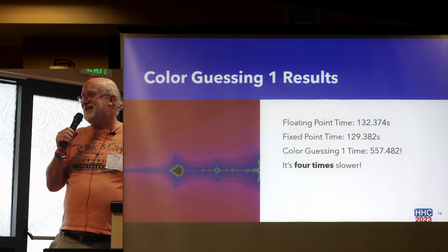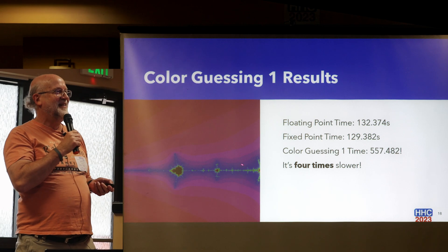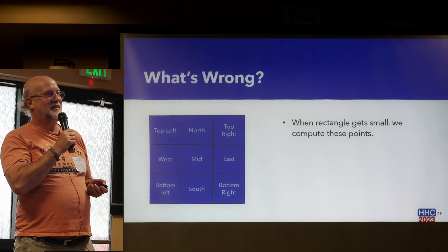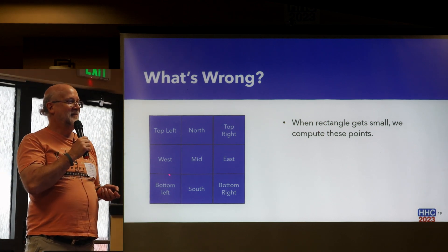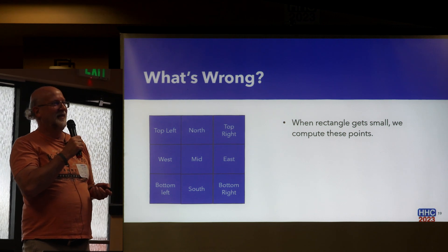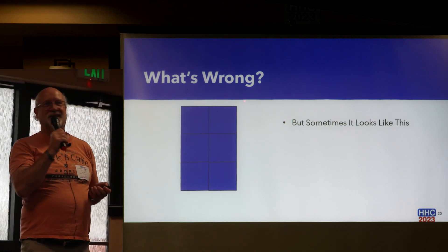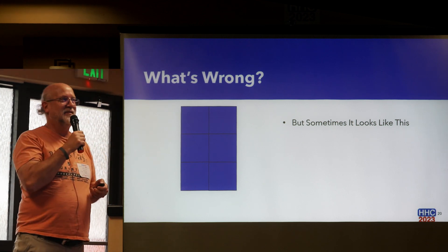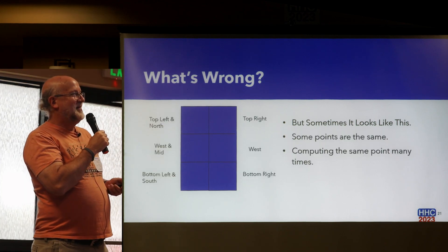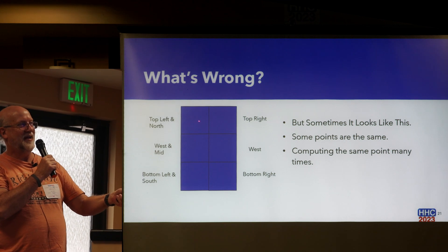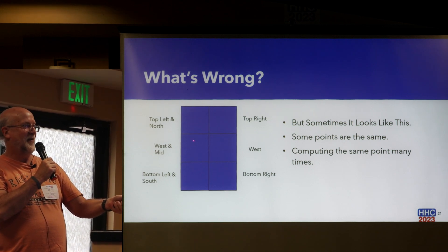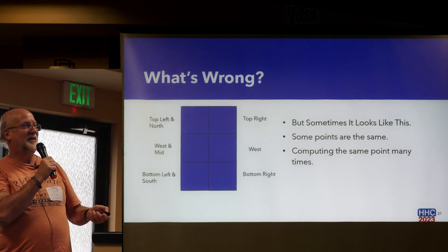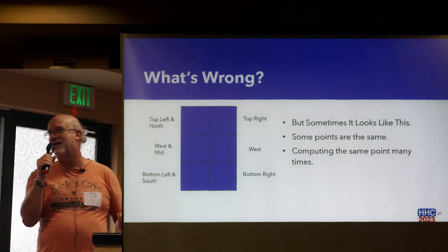Back in the 80s this was a big deal — it did great. So what's going on? The problem is when the rectangle gets small, we end up recomputing the same points. For example, a point that is both the top-left corner and the north midpoint gets computed twice. It turns out we're computing the same point a whole lot over and over again.